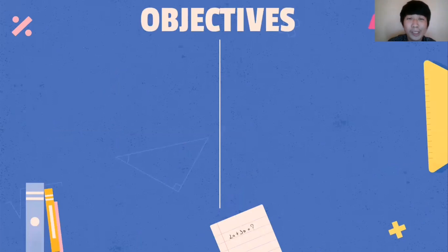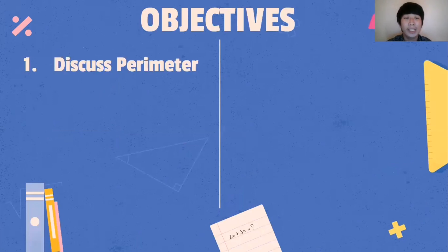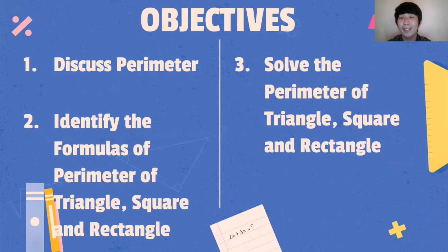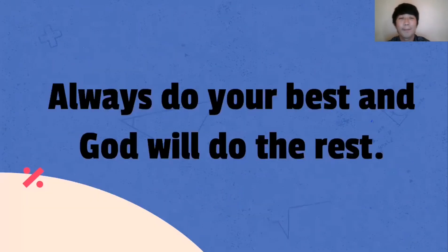Before we start, let's take the objectives of this lesson. Number 1: Discuss perimeter. Number 2: Identify the formulas for the perimeter of a triangle, square, and rectangle. Number 3: Solve the perimeter of a triangle, square, and rectangle.